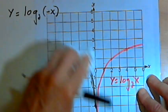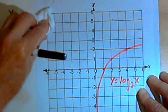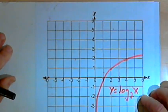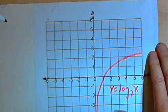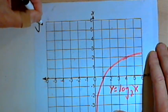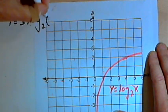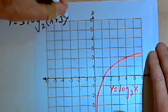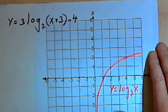Now, let's see what we can do by combining some of these different transformations into one function. So let's try y equals 3 times the log base 2 of x plus 3 minus 4. Let's get an idea of what that's going to do.